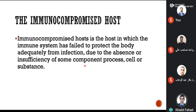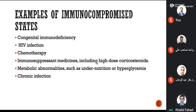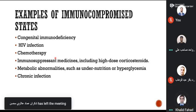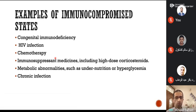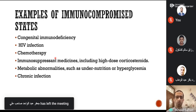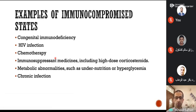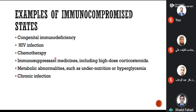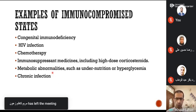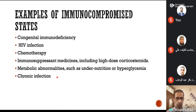Examples of immune-compromised hosts include those who are congenital — the person born with congenital immune deficiency, which could be either cellular or humoral — or it could be acquired. The classical example is AIDS or HIV infection. Or it could be iatrogenic, for instance chemotherapeutic agents and other immunosuppressant medicines, such as high-dose corticosteroids. Sometimes it is due to metabolic abnormalities such as malnutrition, diabetes, and some infections that put the patient in immune-compromising states — for example, recent measles may cause immune compromise for one or two years.